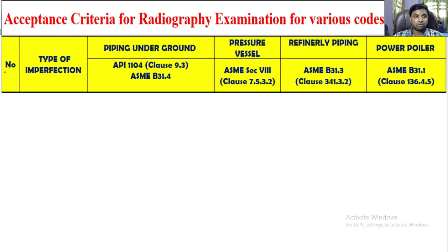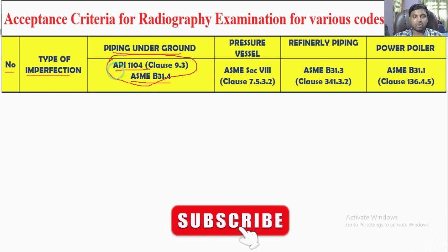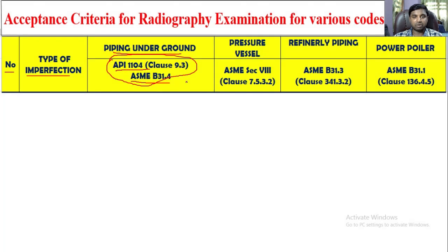So you see here — first is column number, then type of imperfection. For piping underground, there is API 1104 and ASME B31.4. If you go ASME B31.4, this is the pipeline, and they will follow API 1104. This is ASME Section VIII, the pressure vessel code standard. Refinery piping is ASME B31.3, clause 341.3.2, and power piping is ASME B31.1. So this is the table.